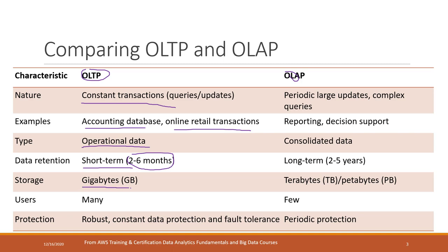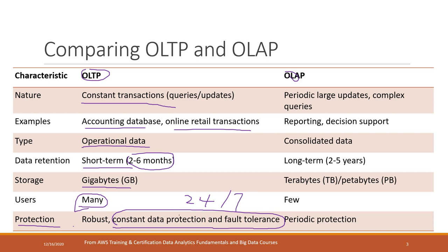OLTP storage requires around just gigabytes of data, and there are a lot of users — for example, the clients of the bank. No matter which type of system, they require very strong protections. For OLTP, it requires constant data protection and fault tolerance, because we have to make sure our banking system is running 24/7. Relational and non-relational databases are suitable for OLTP.